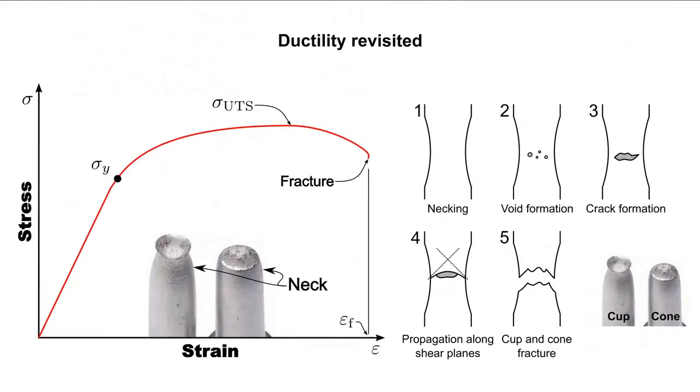Let's now apply this appreciation of plasticity in describing the macro scale behavior encountered during a uniaxial tensile test. We can apply dislocation dynamics to describe the stages of a ductile failure, starting from when the necking occurs at the ultimate tensile stress.